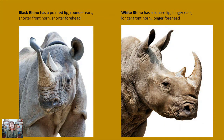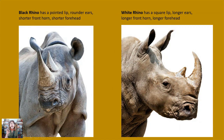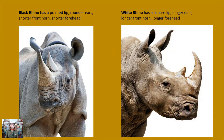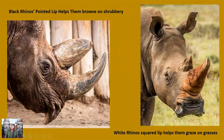The black rhinoceros has sort of a pointy lip, and that pointy lip helps them because they have a different way of eating and a different habitat than the white rhino. They use that pointy, almost prehensile lip — kind of like a giraffe uses their lips and tongue to get leaves. They're a little bit more like a giraffe in eating more leaves, bark, stems, and twigs.